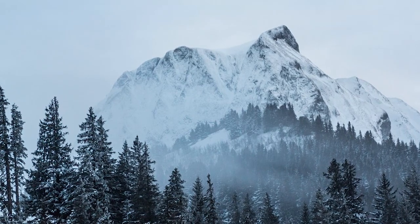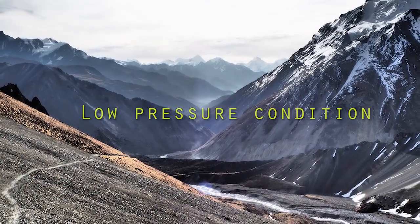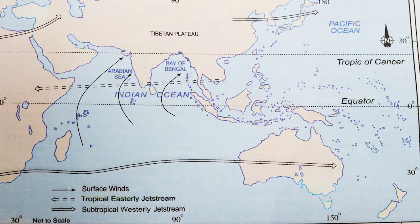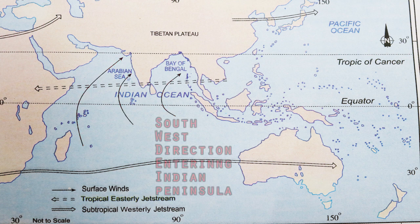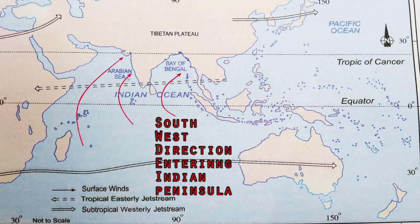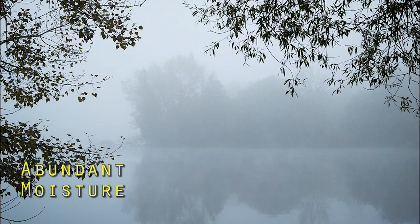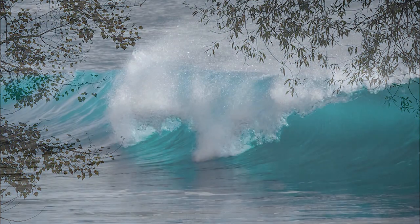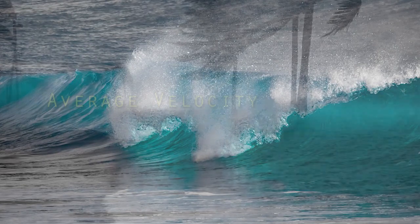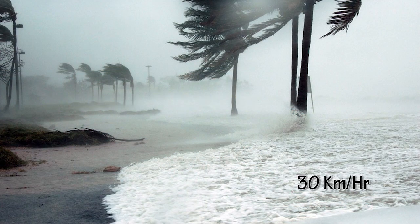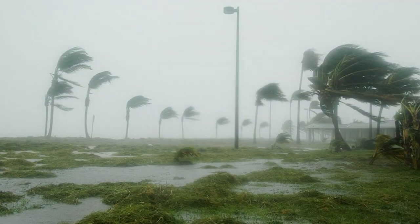By early June, the low pressure condition over the northern plains intensifies. The Southeast trade winds originate over the warm subtropical areas of the Southern Oceans, cross the equator and blow in the southwest direction entering the Indian peninsula. As these winds blow over warm oceans, they bring abundant moisture to the subcontinent. These winds are strong and blow at an average velocity of 30 km per hour and cover the country in about a month.